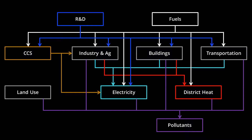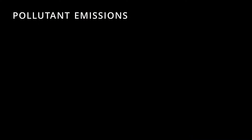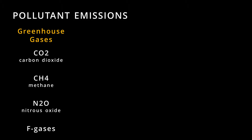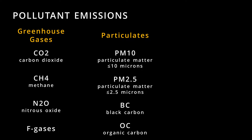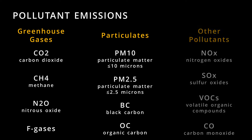Pollutants are one of the most important outputs of the model. The EPS estimates emissions of 12 different pollutants. Four are greenhouse gases: carbon dioxide, methane, nitrous oxide, and F-gases, or high global warming potential fluorinated gases. Four are particulates: PM10, or particulate matter 10 microns or less in aerodynamic diameter, PM2.5, black carbon, and organic carbon. There are also four other pollutants: nitrogen oxides (NOx), sulfur oxides (SOx), volatile organic compounds (VOCs), and carbon monoxide.